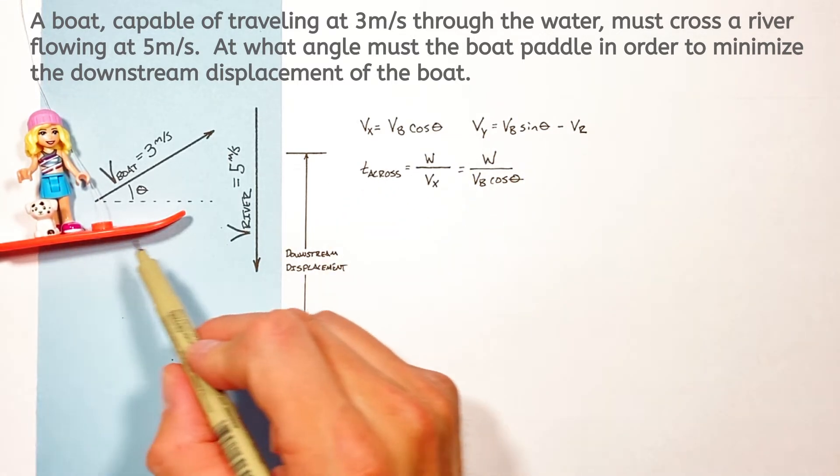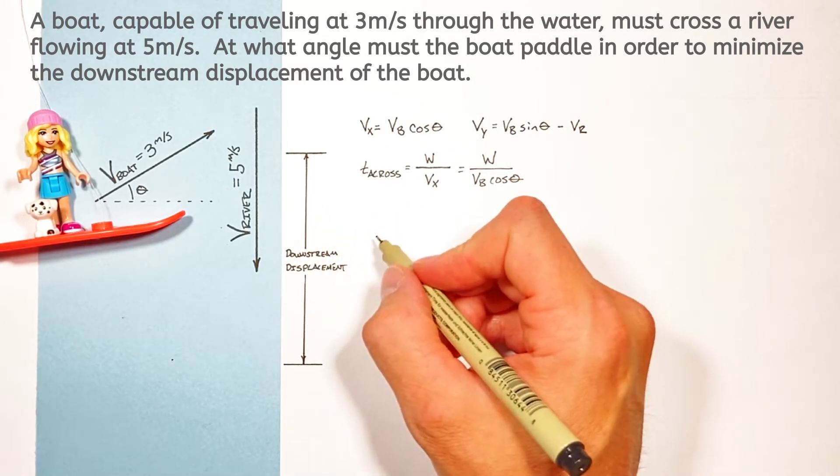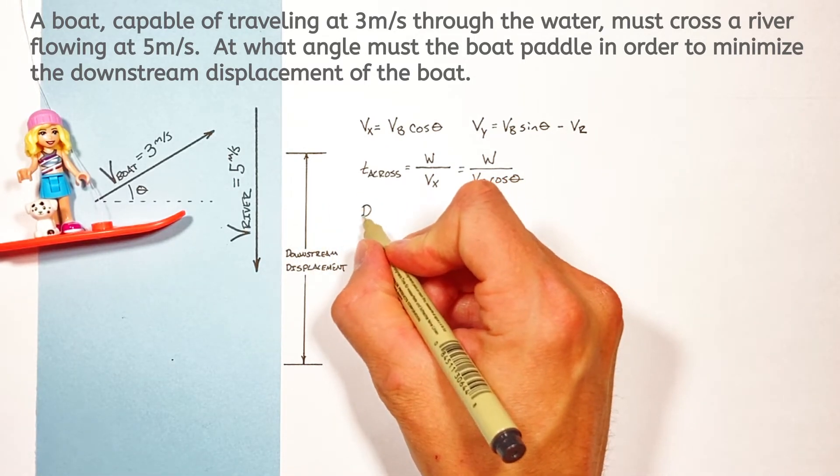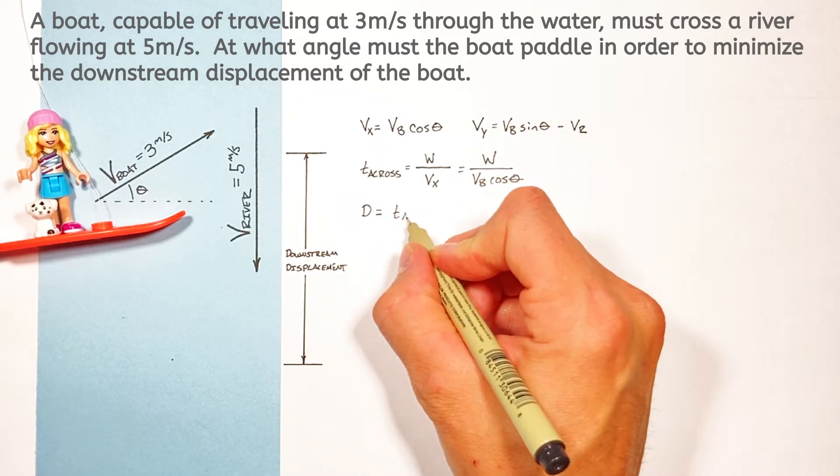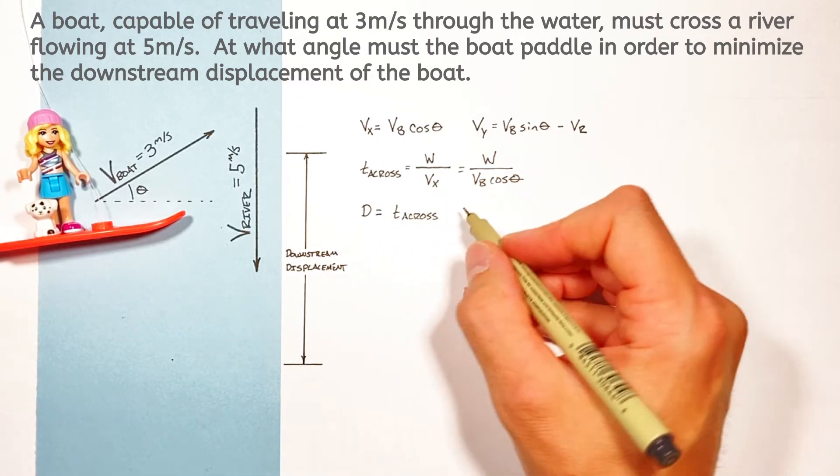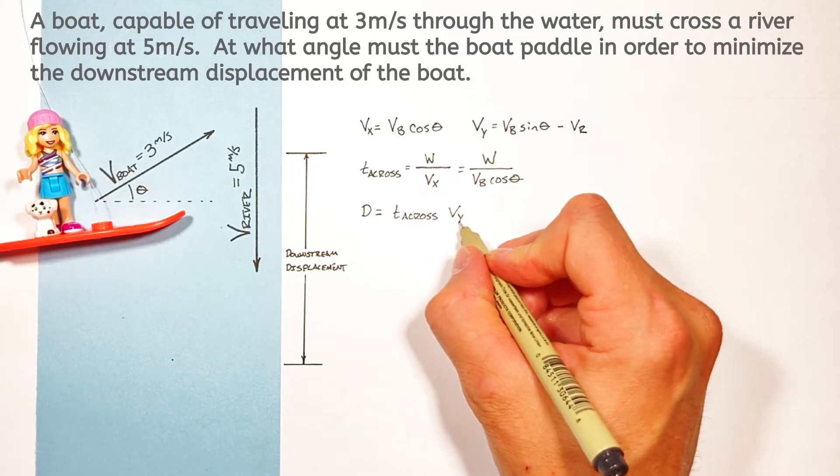Now realize the entire time the boat is traveling across the river it's also moving downstream. So downstream displacement let's call it D is gonna be given by the time for the boat to cross the river multiplied by how fast it's gonna be moving downstream.